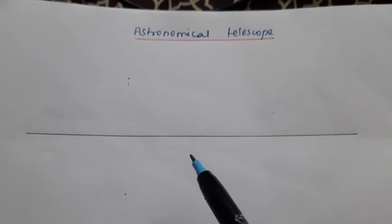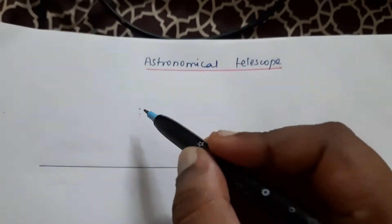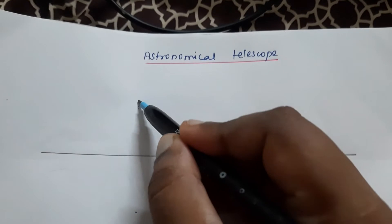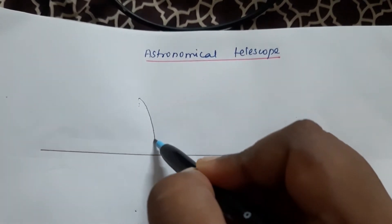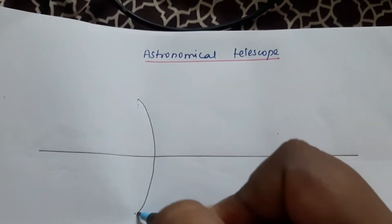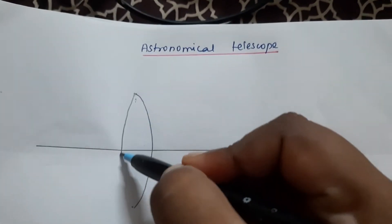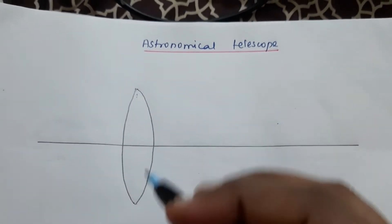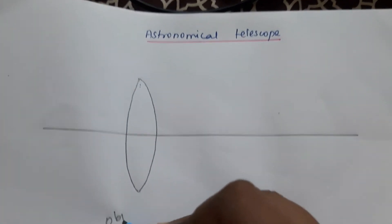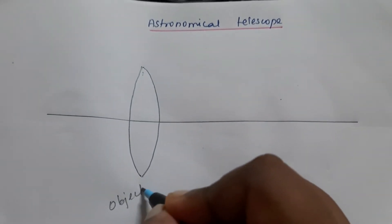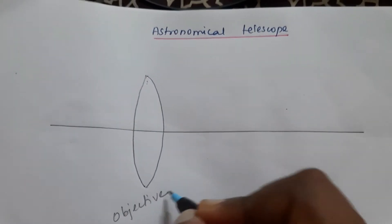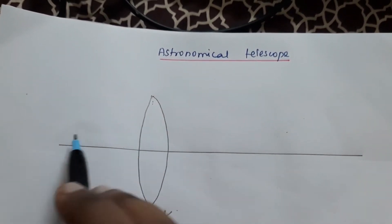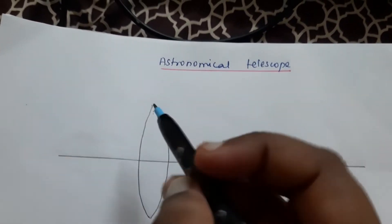The objective is of long focal length and has a much larger aperture. So here I am taking an objective which has a long focal length and larger aperture. This lens, which is nearer to the object, is called the objective.